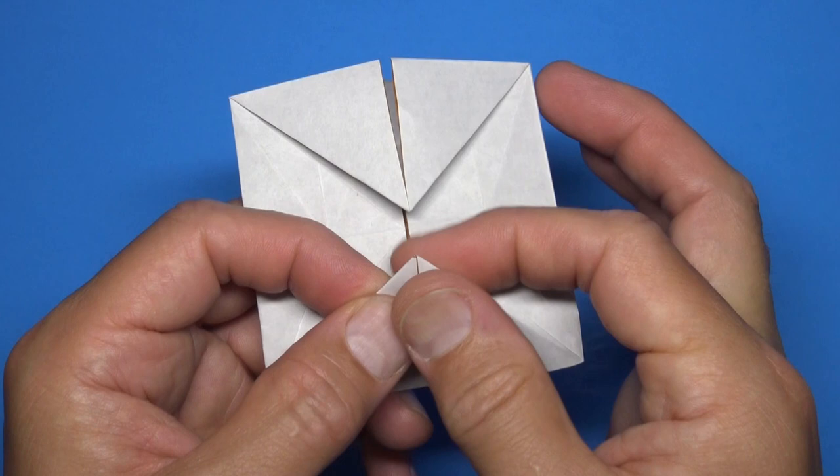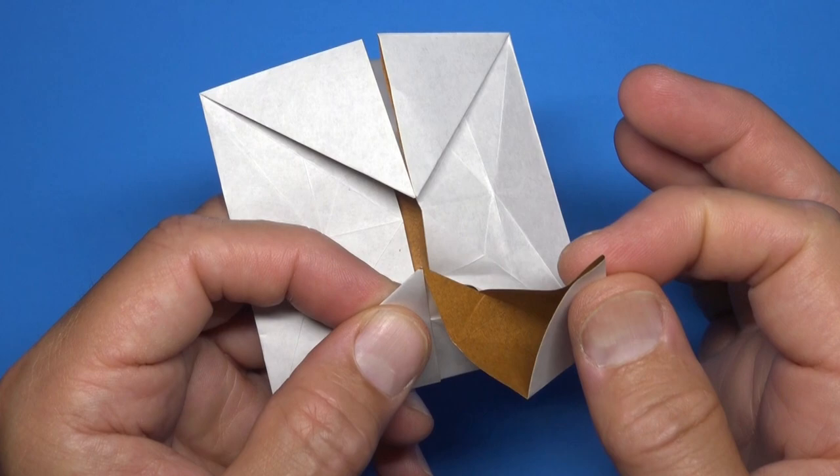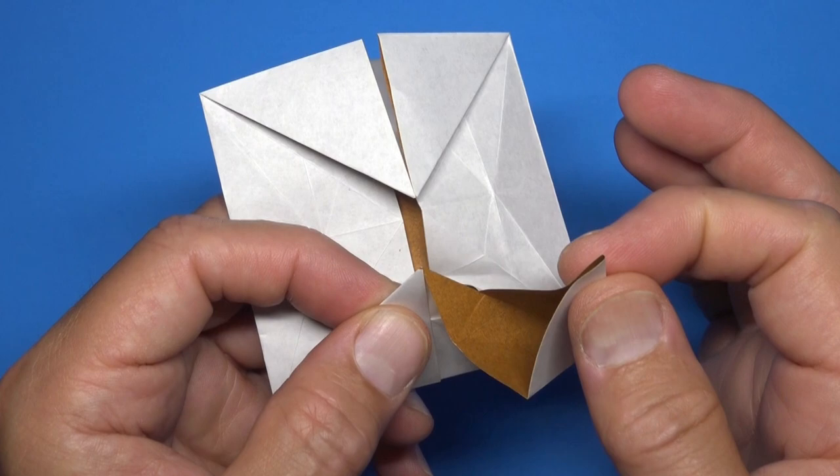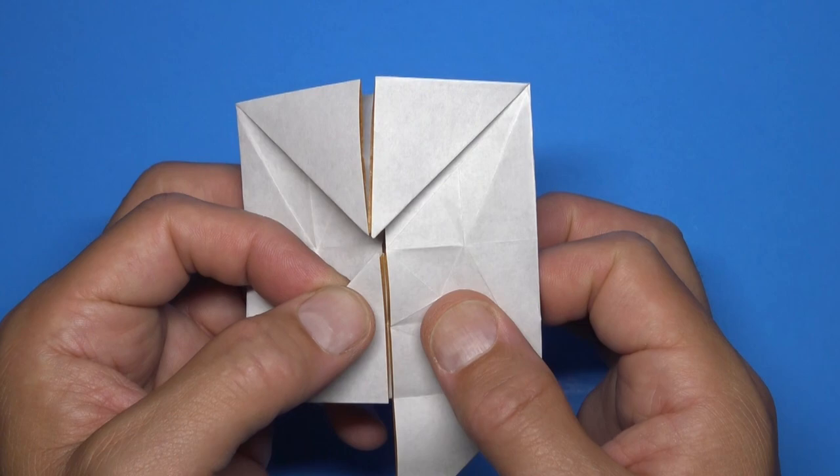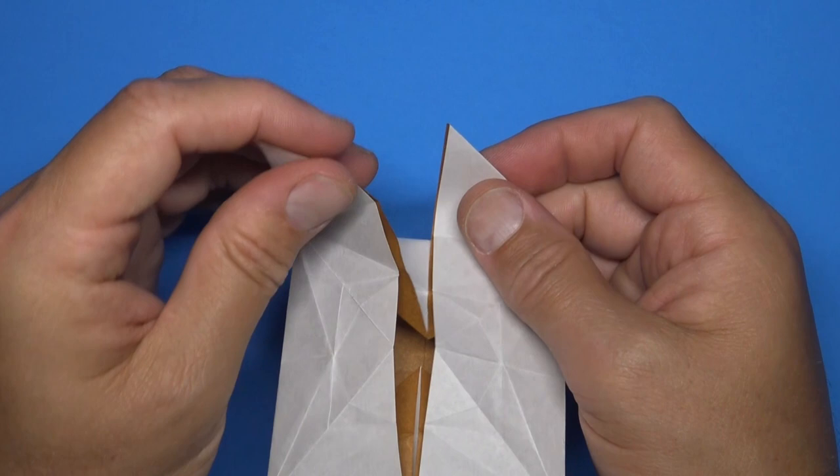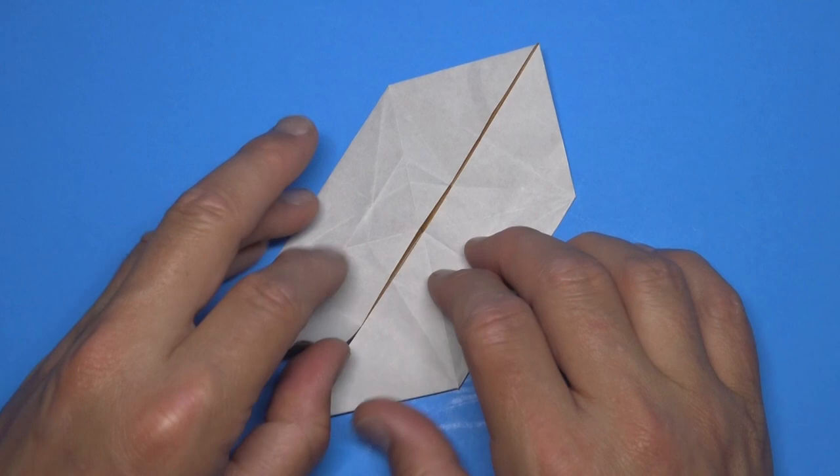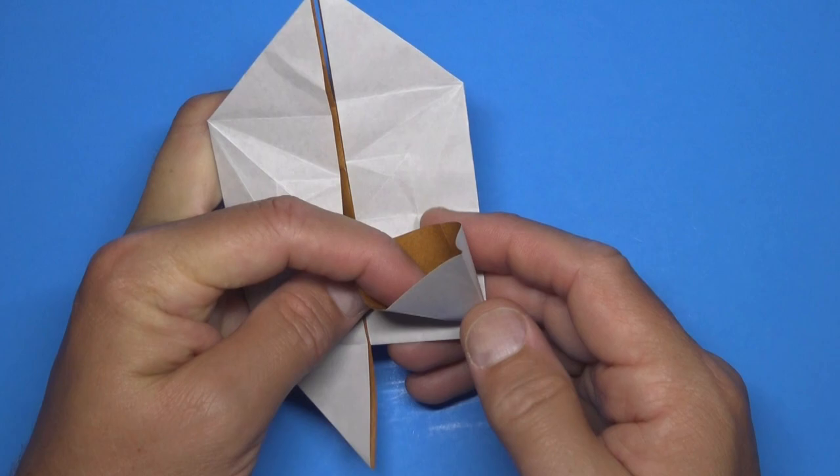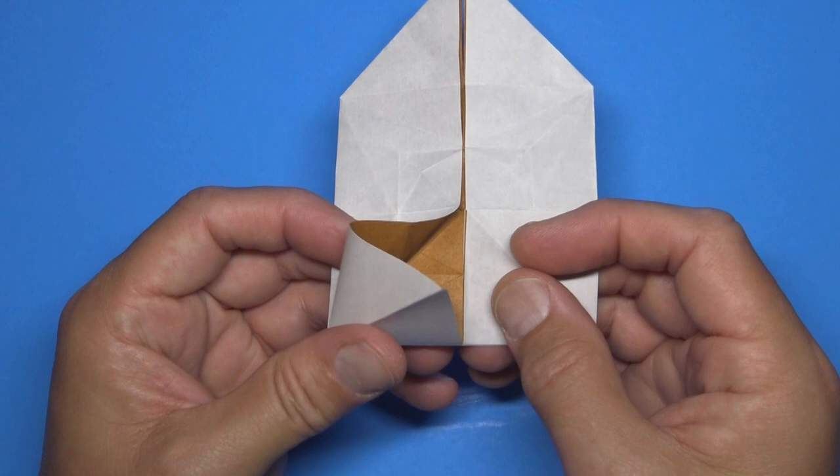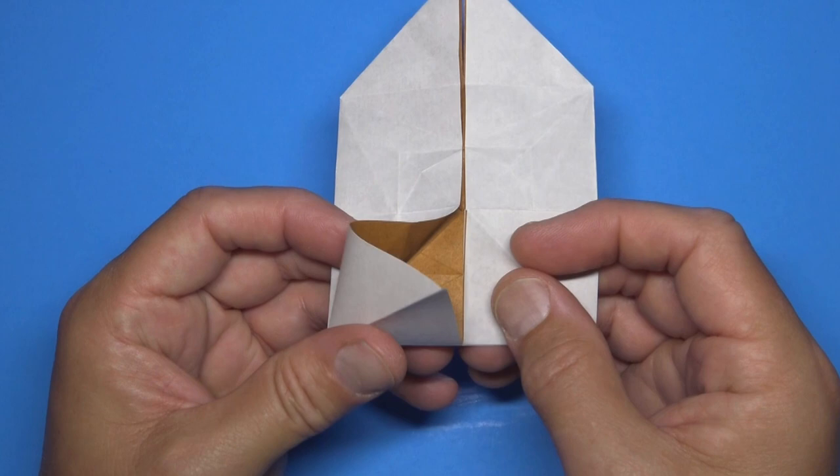Now holding here, right here, just pull this single layer out. Just pull the corner out and down. And now holding here, pull this corner out and down. Repeat on the top here. Fold this flap up and open it and flatten. And again on this side, open and squash it. And repeat.